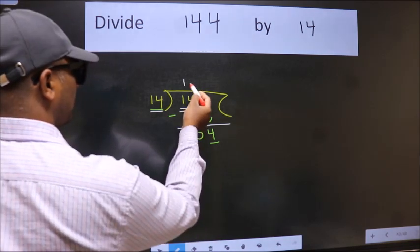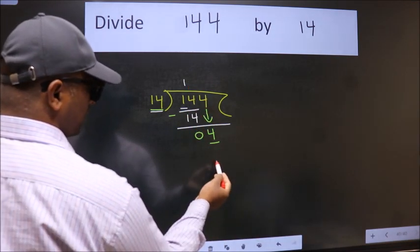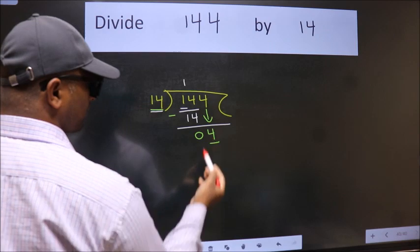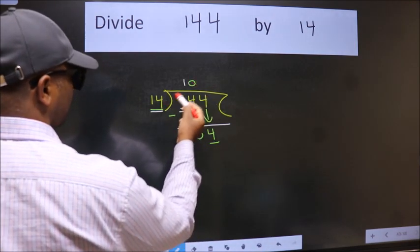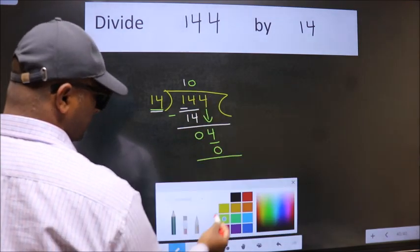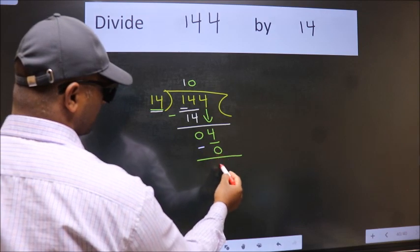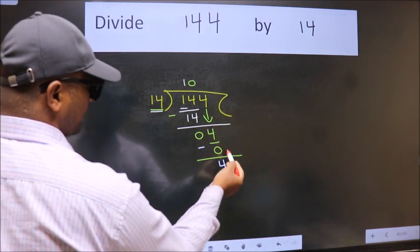If I take one, we will get 14, but 14 is larger than 4. So what we do is we take zero here. So 14 into 0: 0. Now we subtract, we get 4. Over here we did not bring any number down.